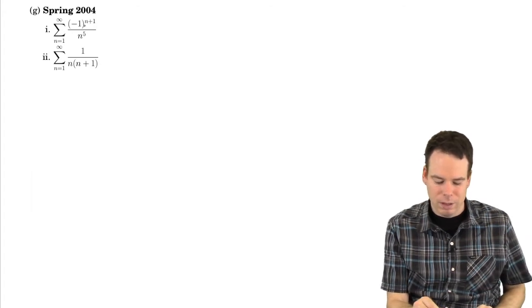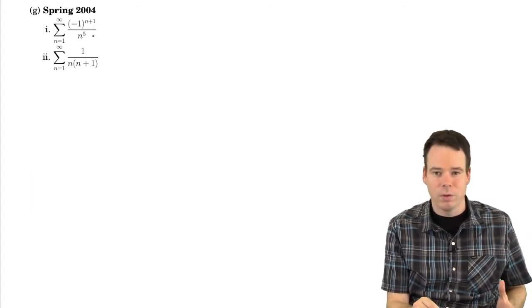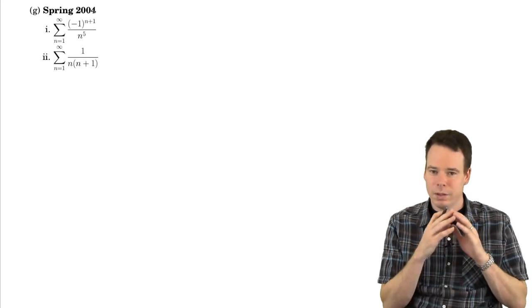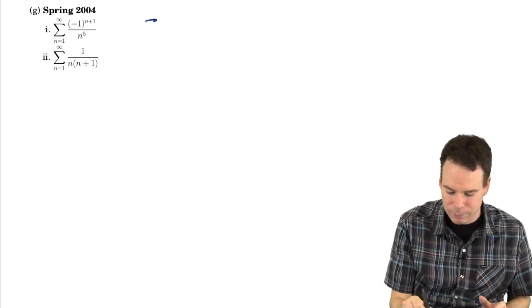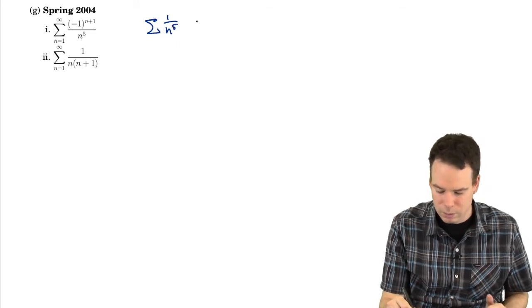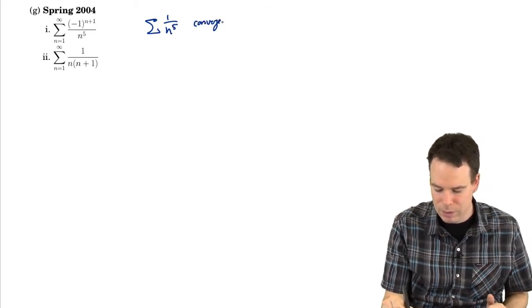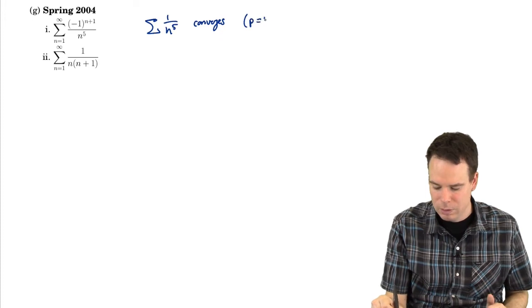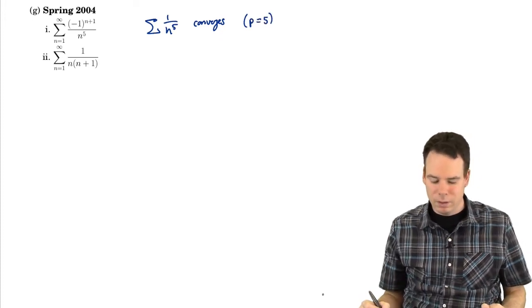The terms are decreasing in magnitude and they're going to zero. But if we ignore the negative sign, this is really just a series of 1 over n to the 5. So looking at the series of absolute values, this converges. That's a p-series with p being 5, so that converges.